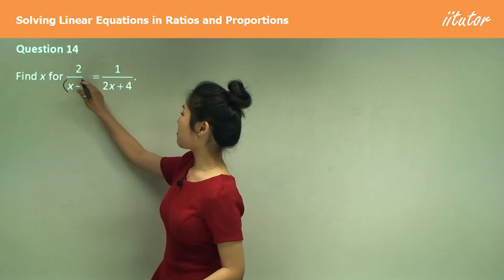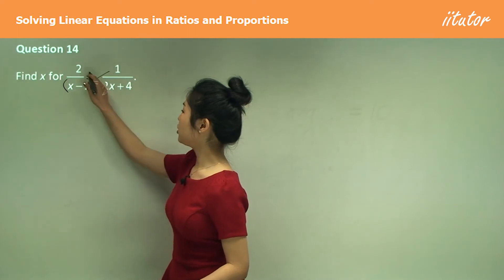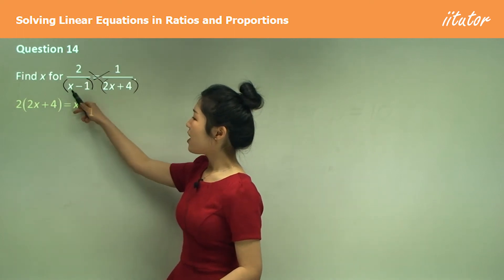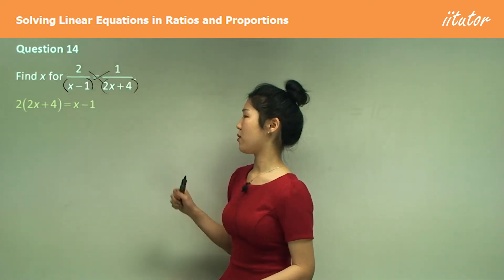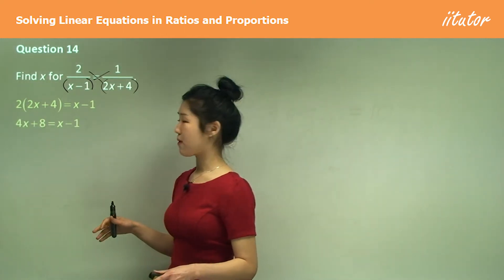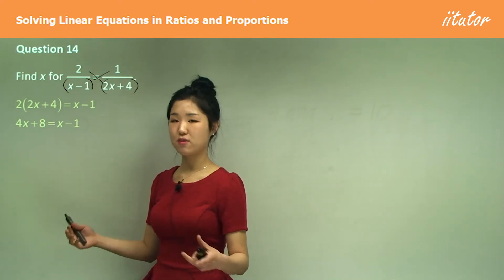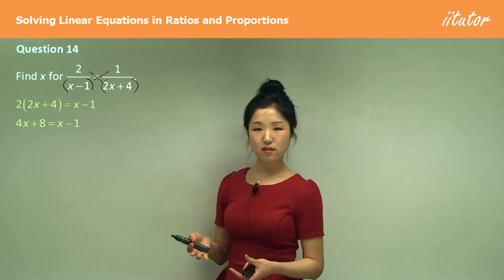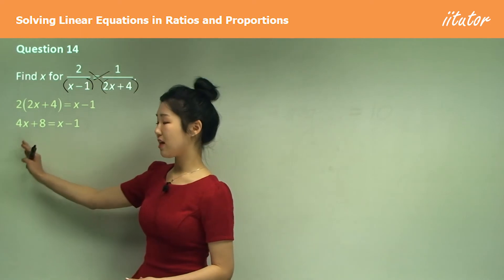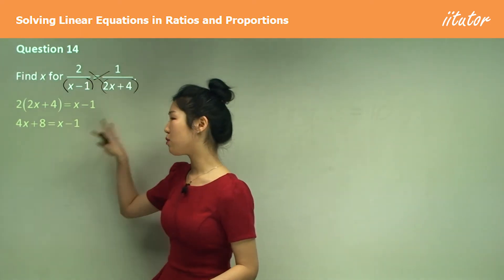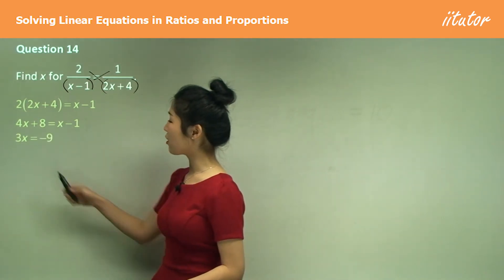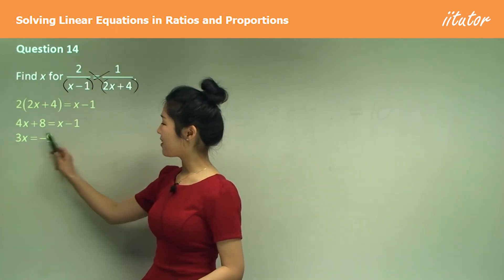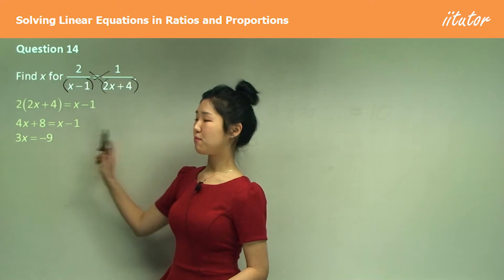Question 14: multiply (x − 1) by 1 and 2 by (2x + 4). So 2(2x + 4) equals (x − 1). Expand everything — no brackets — so gather like terms. 2 times 2x is 4x, and 2 times 4 is 8. Gather all x's on the left: 4x minus x becomes 3x. Move constants to the right: negative 1 minus 8 becomes negative 9.